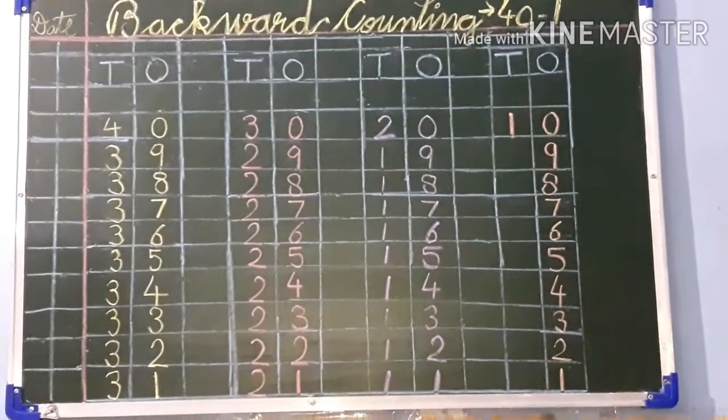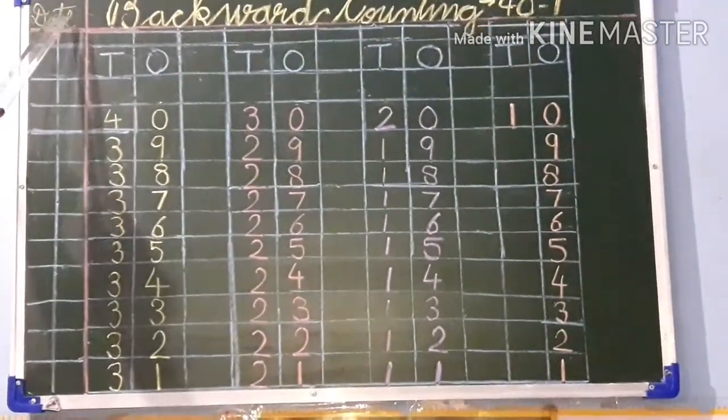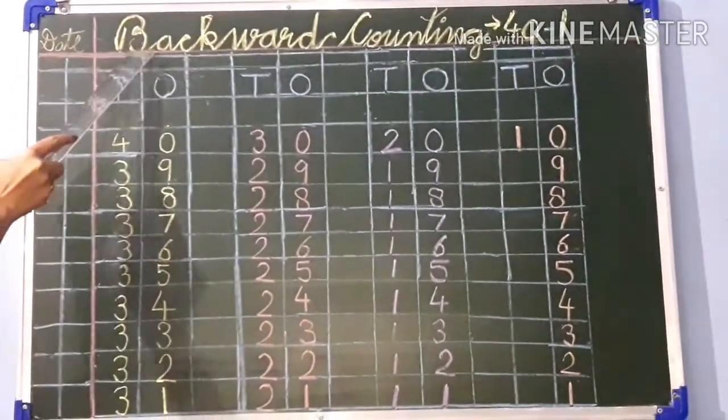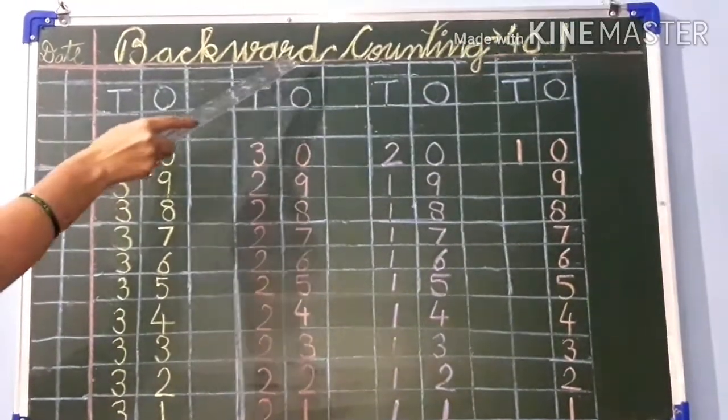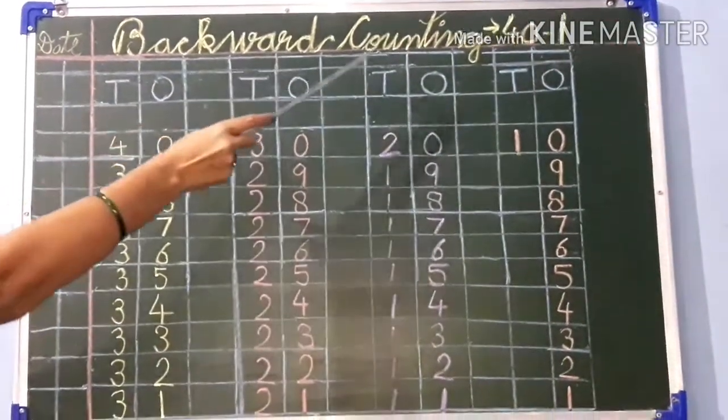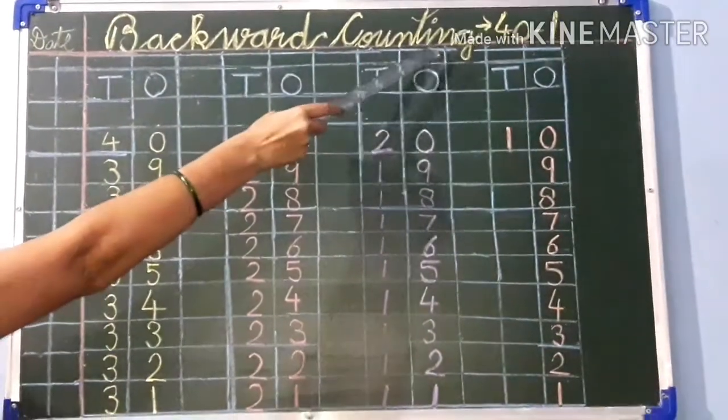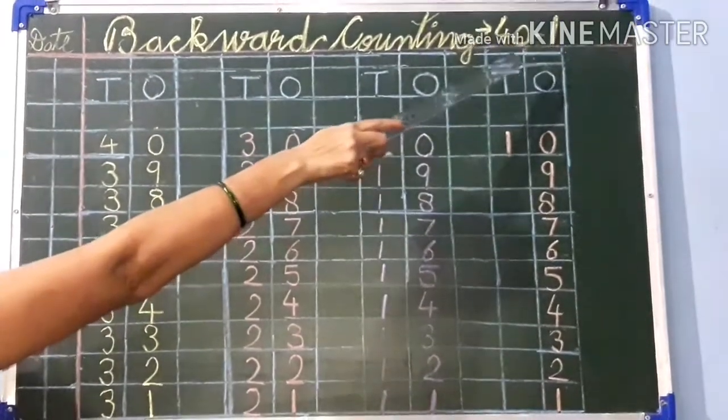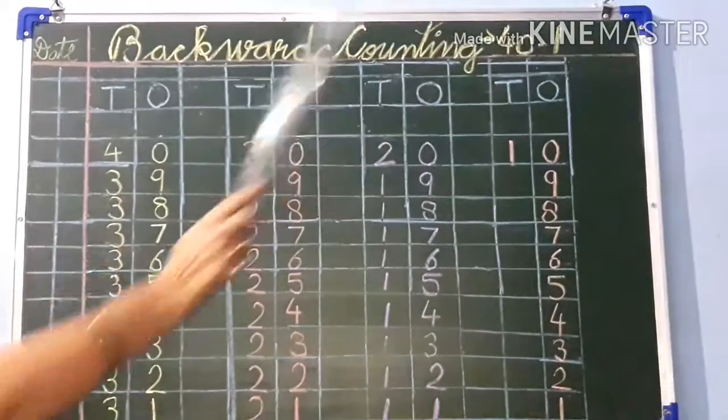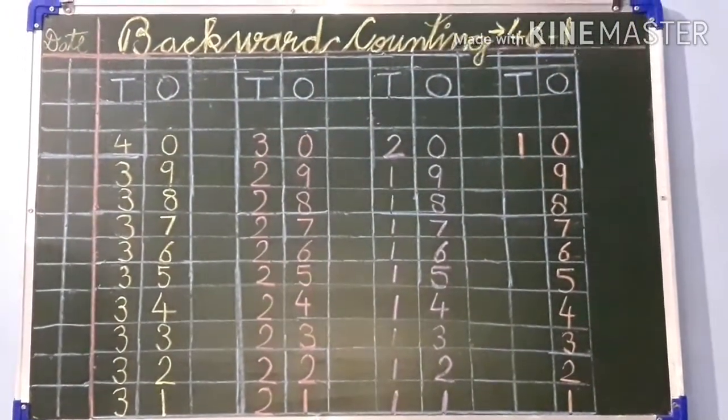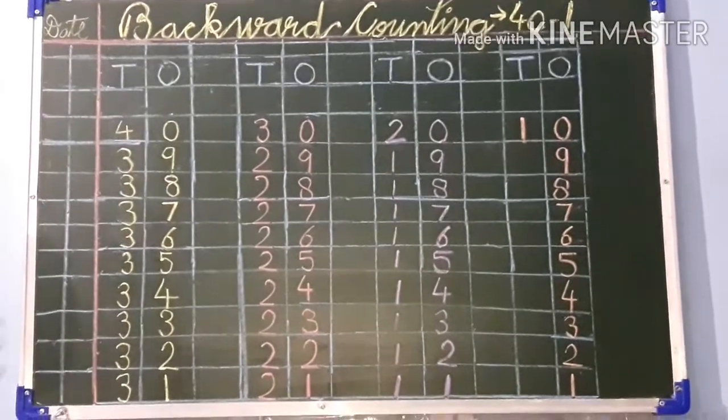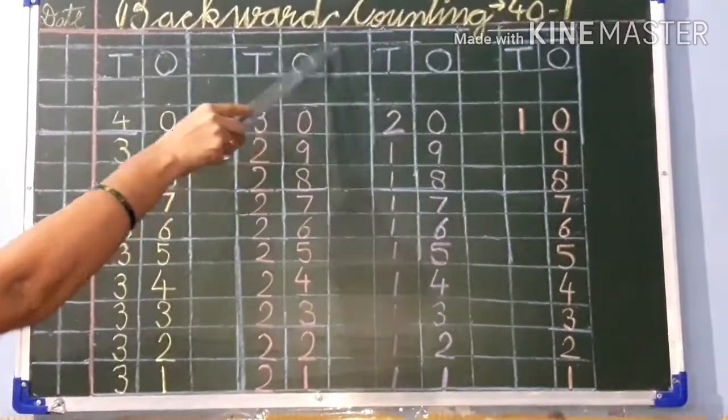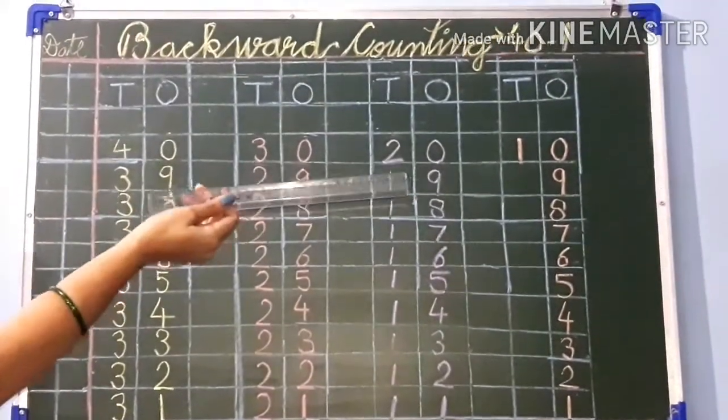Let's begin our work. Firstly you have to write down date in this corner. Then write down this heading: B A C K W A R D Backward, C O U N T I N G Counting, 40-1. I hope you all have written this heading. After writing the heading you will underline it with blue marker pencil with the help of a ruler.